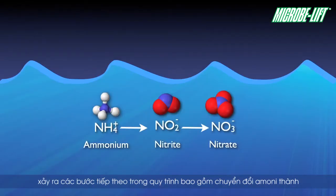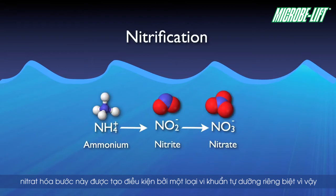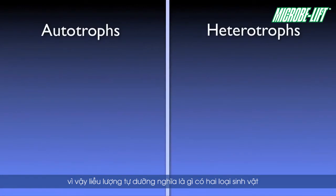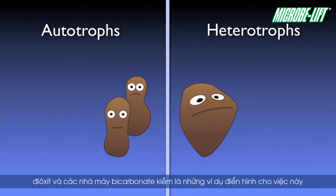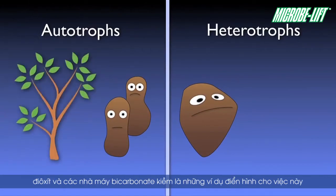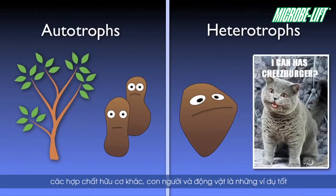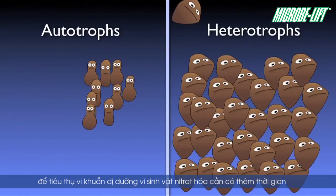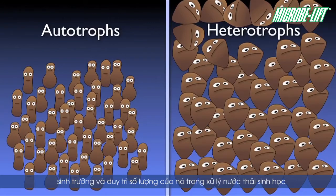The next step in the process consists of converting ammonium to nitrite and then nitrate. This two-step process is usually lumped into one term: nitrification. This step is facilitated by specialized autotrophic bacteria. Autotrophs are able to obtain their carbon from non-organic sources, such as carbon dioxide and alkaline bicarbonate — plants are good examples. Heterotrophs, on the other hand, require organic sources of carbon, essentially consuming other organic compounds — humans and animals being good examples. In contrast to heterotrophic BOD-consuming bacteria, autotrophic nitrifiers require more time to mature and maintain their population in a biological wastewater treatment system.